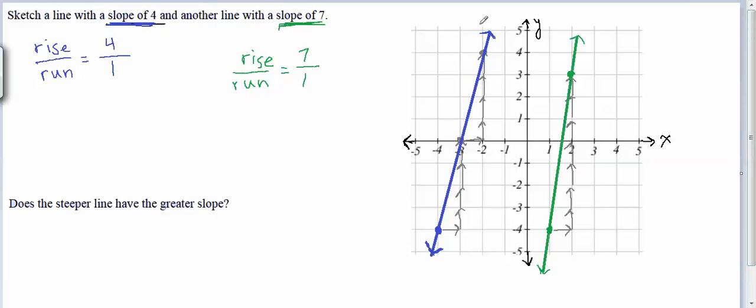And there we have a line with a slope of 4, shown in blue, and a line with a slope of 7, shown in green. And so now it's asked, we've completed the first part of the question. The second part of the question asks, does the steeper line have the greater slope?